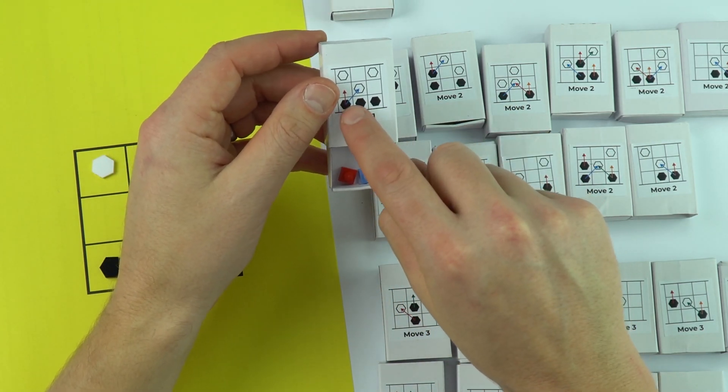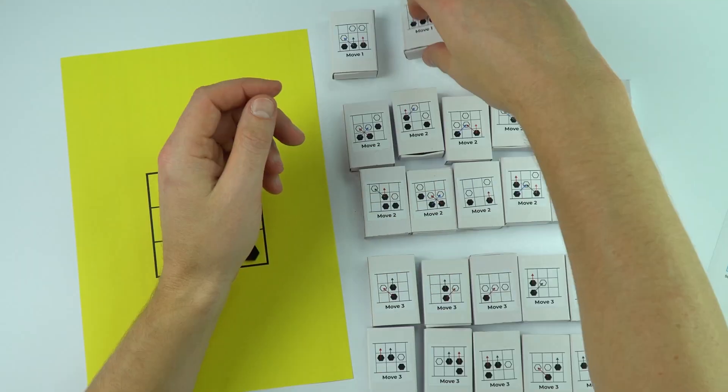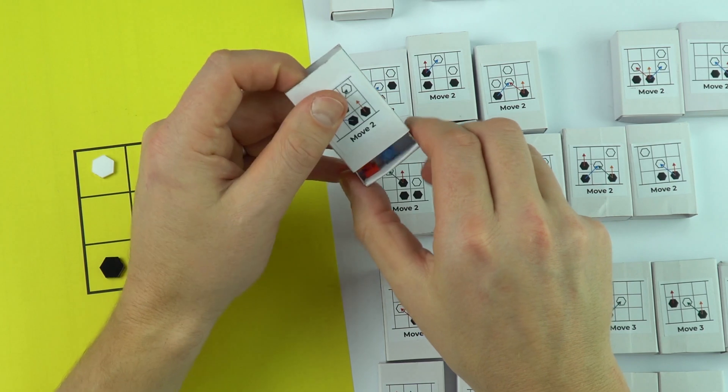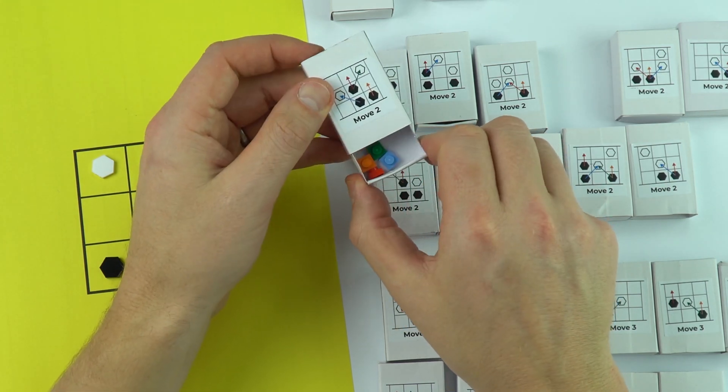This one here just has two possible moves, a red and a blue. Other ones, maybe this one over here, have four possible moves that could be made, so I've got four counters or tokens inside.